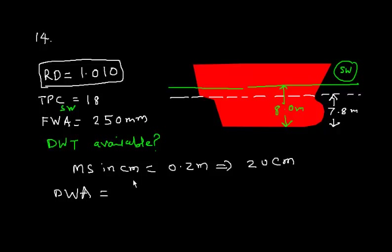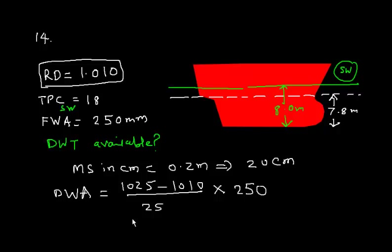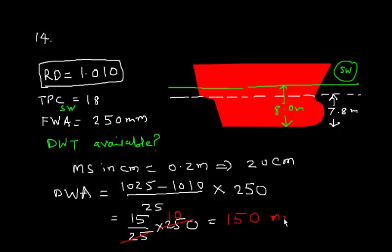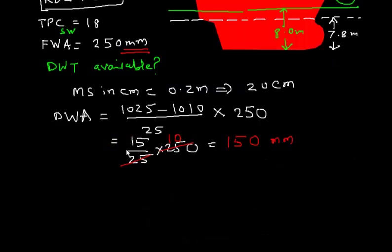The dock water allowance formula is: (1025 minus 1010) divided by 25, multiplied by the fresh water allowance of 250 mm. That gives 15 divided by 25 into 250, which equals 150. The unit is millimeters, since fresh water allowance is in millimeters. Converting to centimeters gives 15 centimeters.